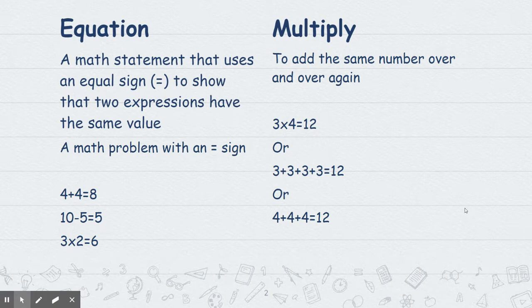Another word is multiply. That means just to add the same number over and over again. So 3 times 4 equals 12, or you can break that down and add 3 plus 3 plus 3 plus 3 to equal 12, or 4 plus 4 plus 4 to equal 12. It's the same number added over and over again.